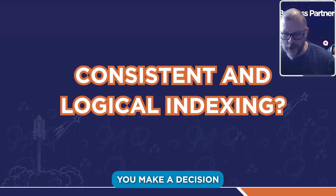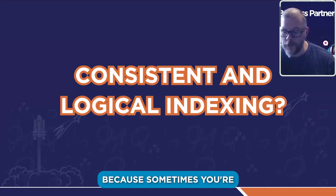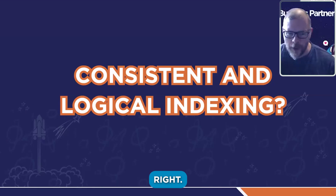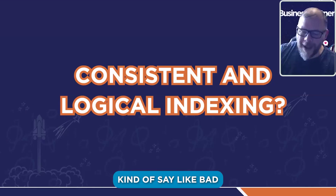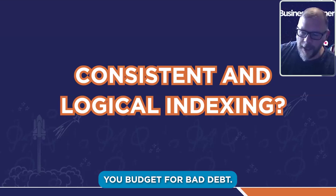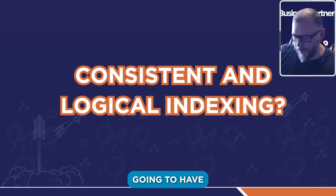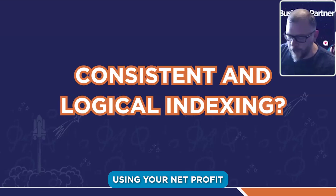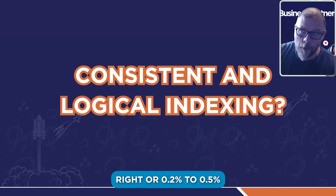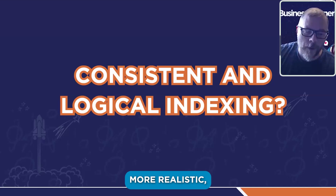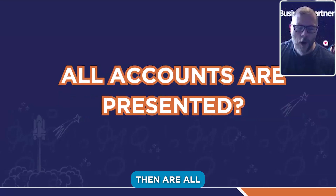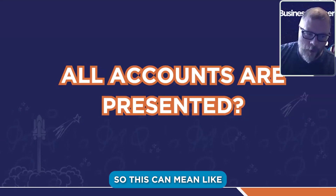Indexing also helps you decide where to put a new account. For example, bad debt is a new account you'd add when you get large enough to budget for it — because you don't just assume everything will get paid. At the end of the day, net profit accounts for usually 0.2 to 0.5% of revenue as bad debt, so you need a place for that in your chart of accounts.